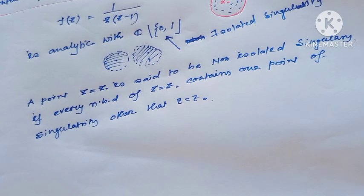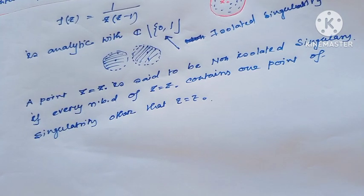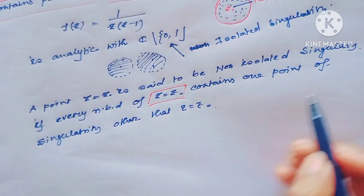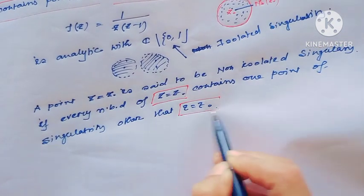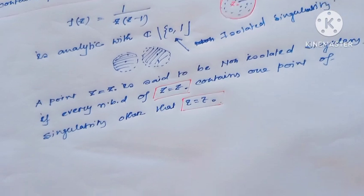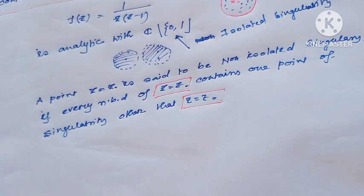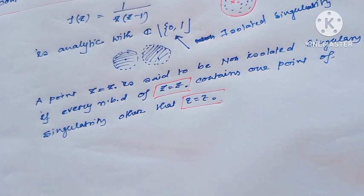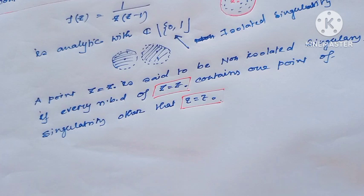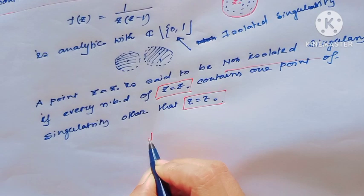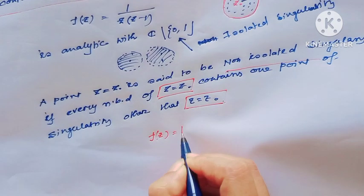A point z equal to z-naught is said to be a non-isolated singularity if every neighborhood of z equal to z-naught contains at least one point of singularity other than z equal to z-naught itself. That means every neighborhood of z-naught contains at least one other singularity. Then this singularity is called non-isolated singularity. For example, consider f(z) equal to tan(1/z).